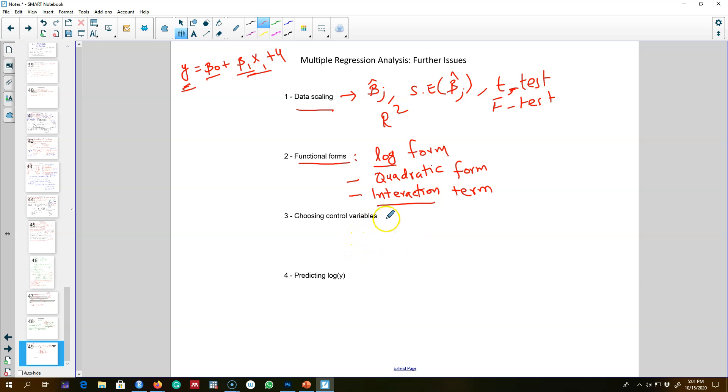And in the third part of this section, I'm going to talk about R-squared. We're going to revisit R-squared and we're going to use R-squared or adjusted R-squared to choose different control variables in the model.